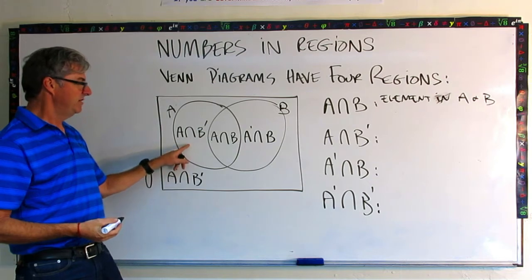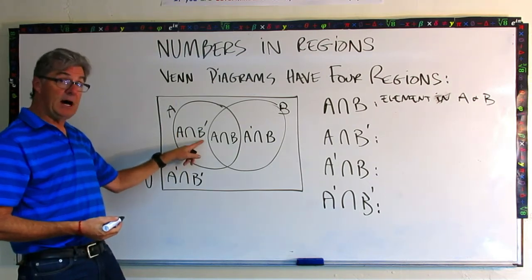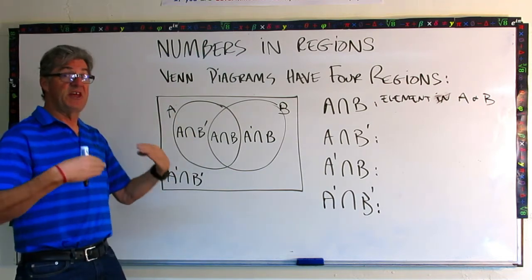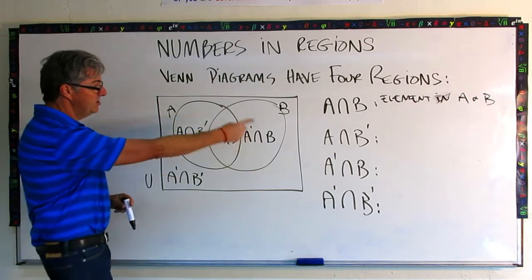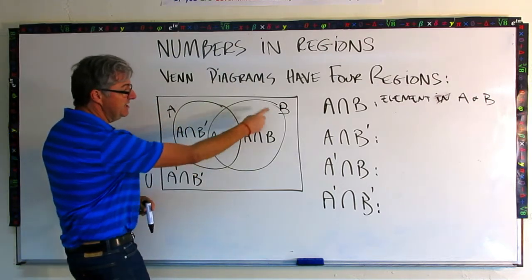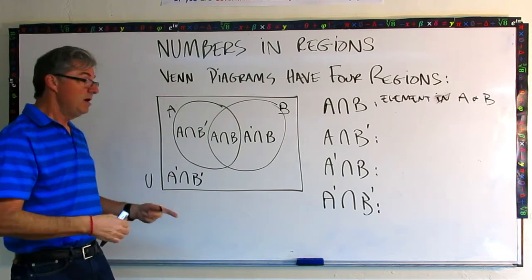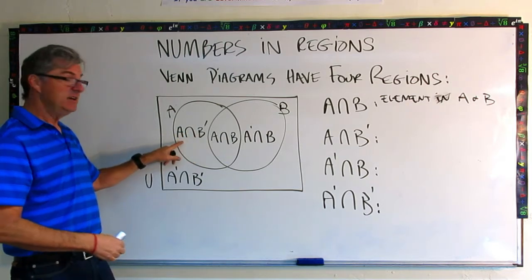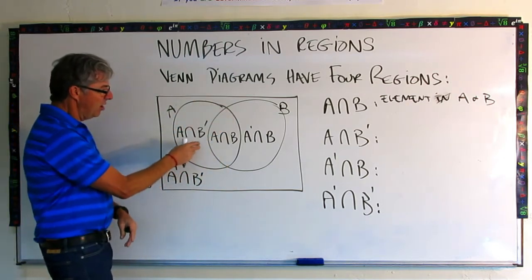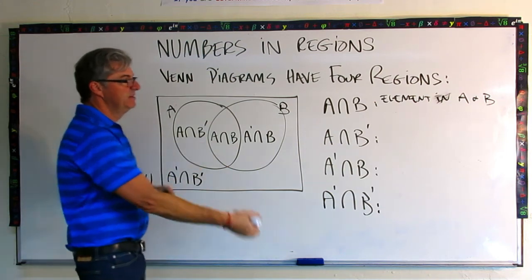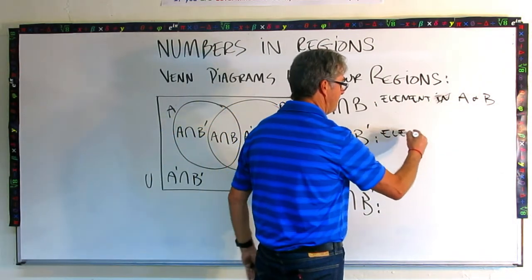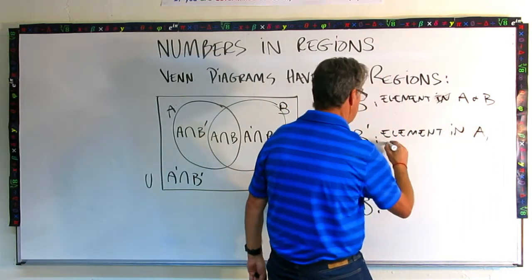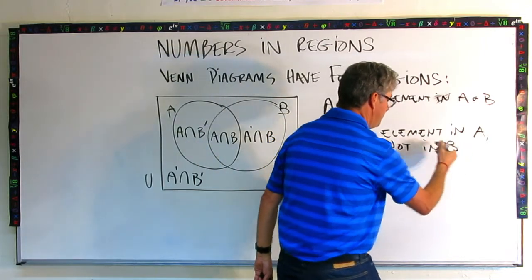This is the intersection of A and the complement of B. The complement of B means all the elements that aren't in B. Everything that's not in the B circle is the complement of B, but this is the intersection of the complement of B and A. So it's just this crescent here — all the elements in A but not in B. What we write here is: elements in A, not in B.